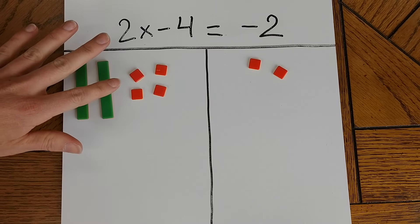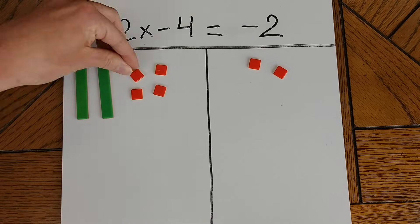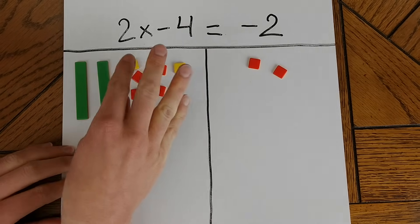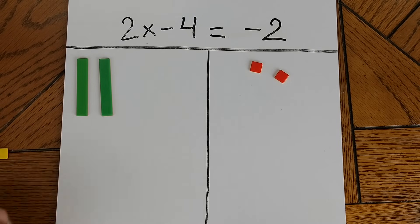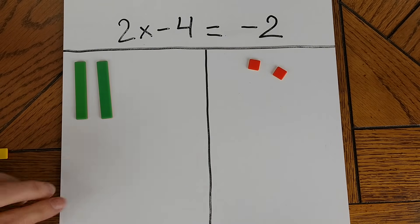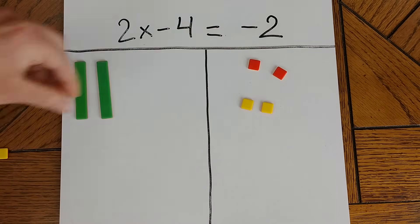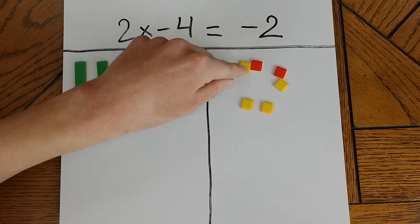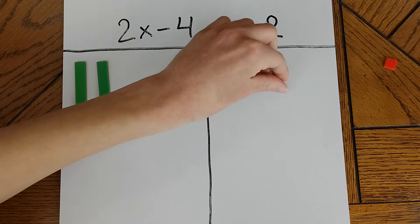So how can I get rid of these four negative tiles? By bringing in four positive units to cancel them out. These will all cancel each other out, which means I can take them all away. Now of course what I do to one side of my equation I have to do to the other side, which means I need to add four positive tiles onto this side. Now two of these yellow tiles are going to pair up with the red tiles and cancel each other out, leaving me with positive 2.